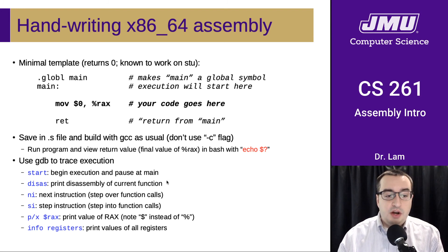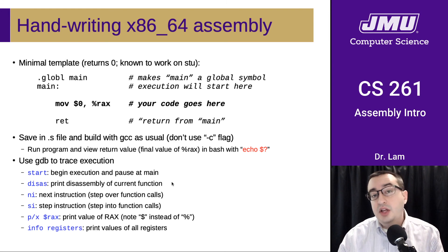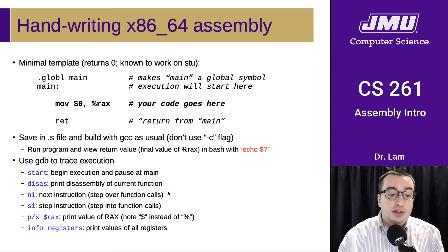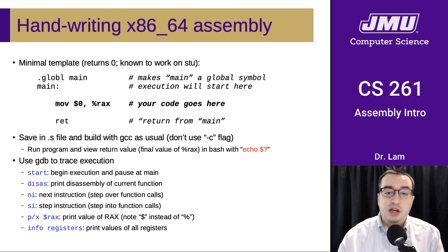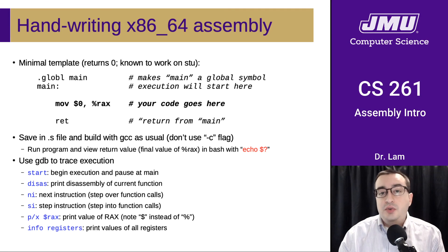Here are some GDB commands useful for debugging machine code instead of C code. Since we have no C code to list, we can look at disassembly using 'disas'. We can't go to the next statement, so we go to the next instruction with 'ni' (next instruction). There is also 'si' (step instruction). We can print the value of registers — note that GDB uses a dollar sign for register names instead of a percent sign, so it's '$RAX'. Or, to see all registers, use 'info registers'. Experiment with this — one goal of this course is the willingness and ability to try things out and see what happens.